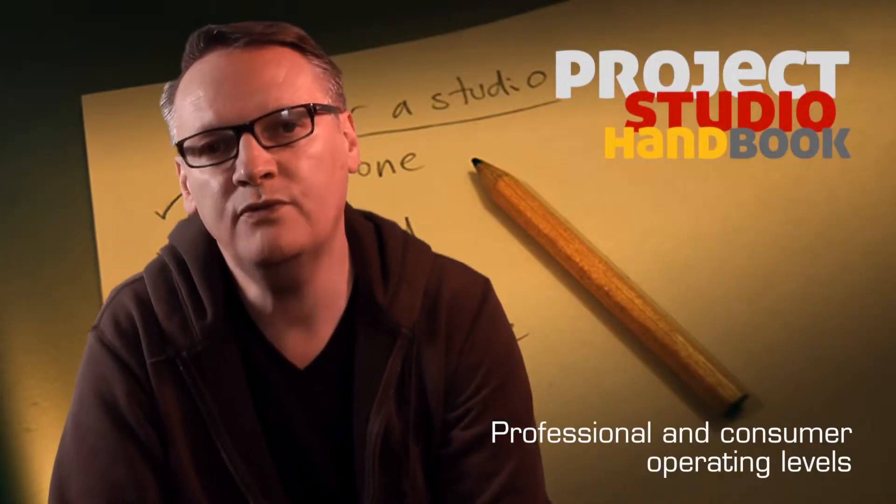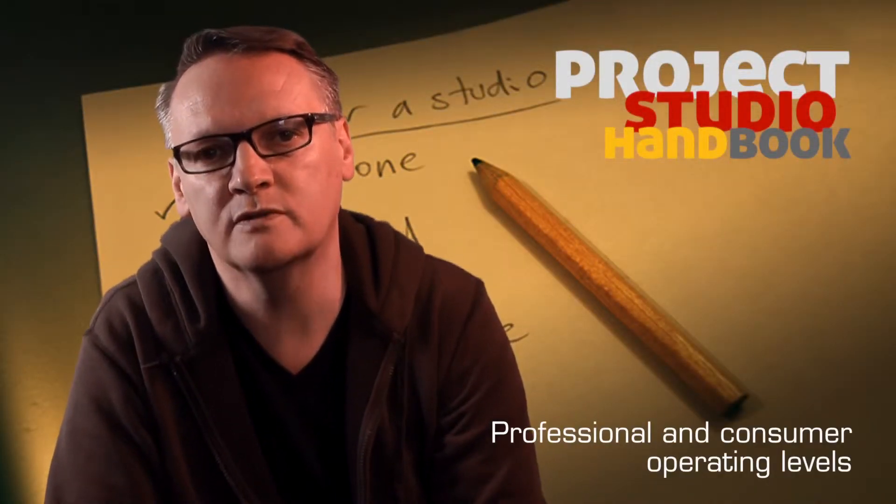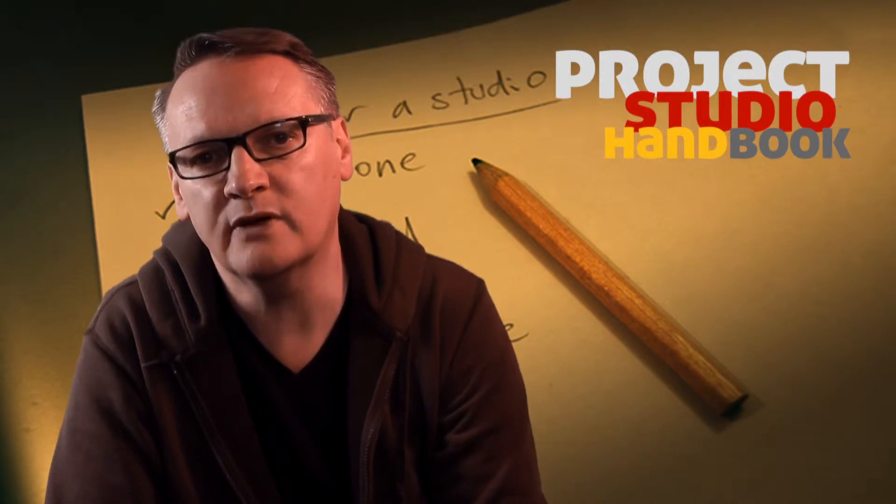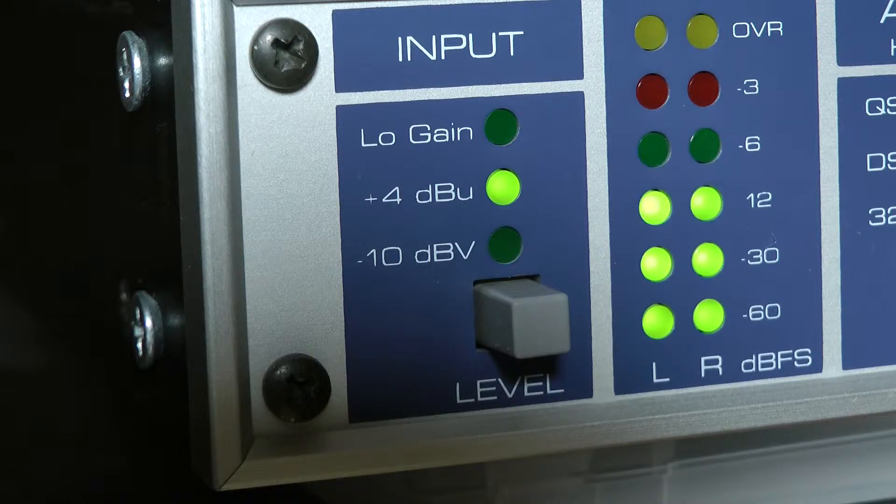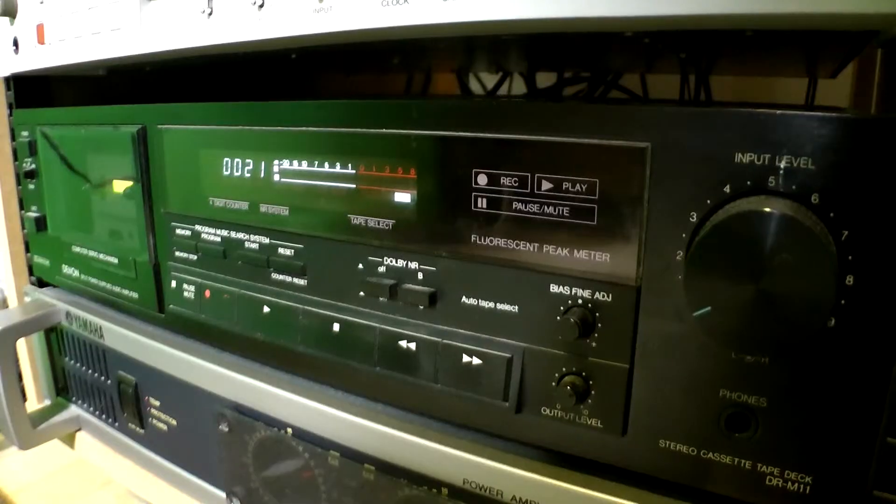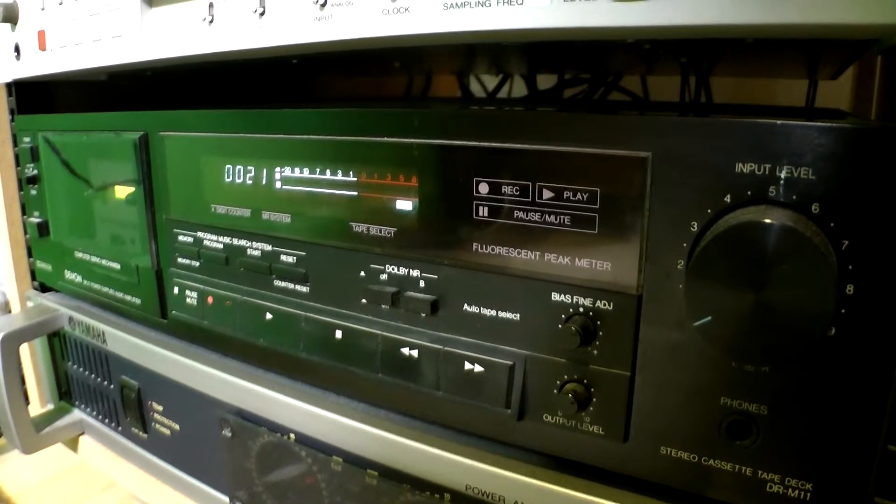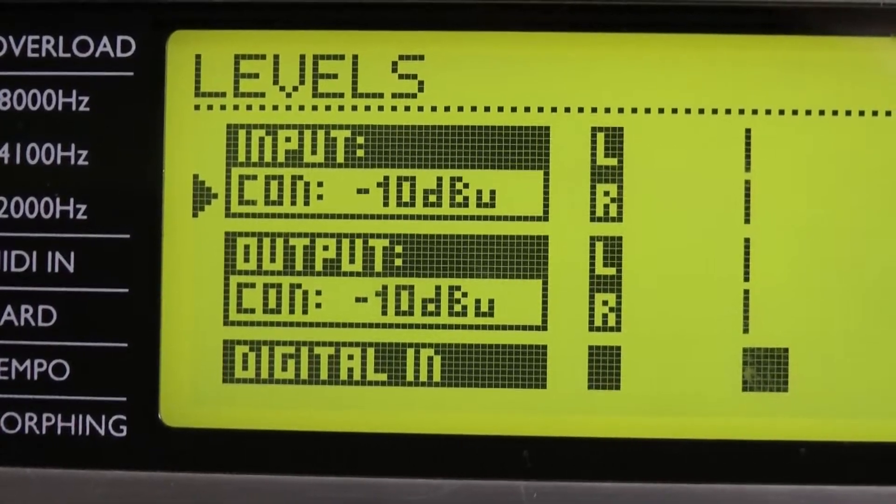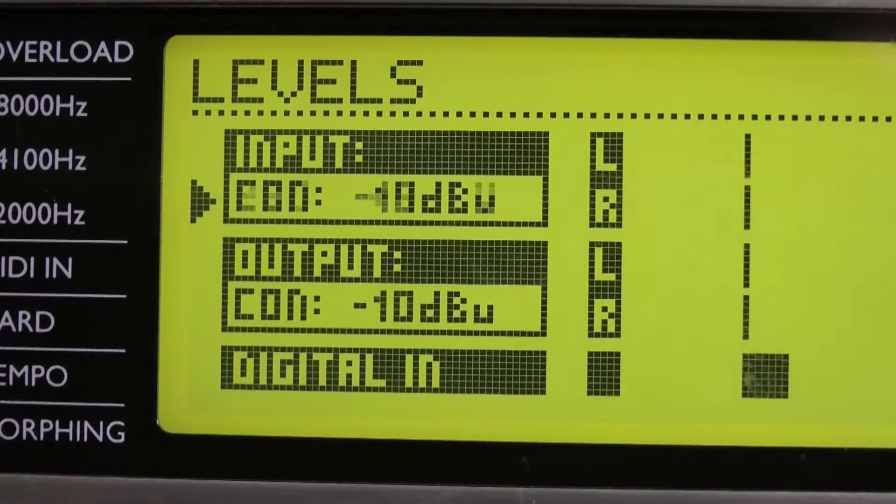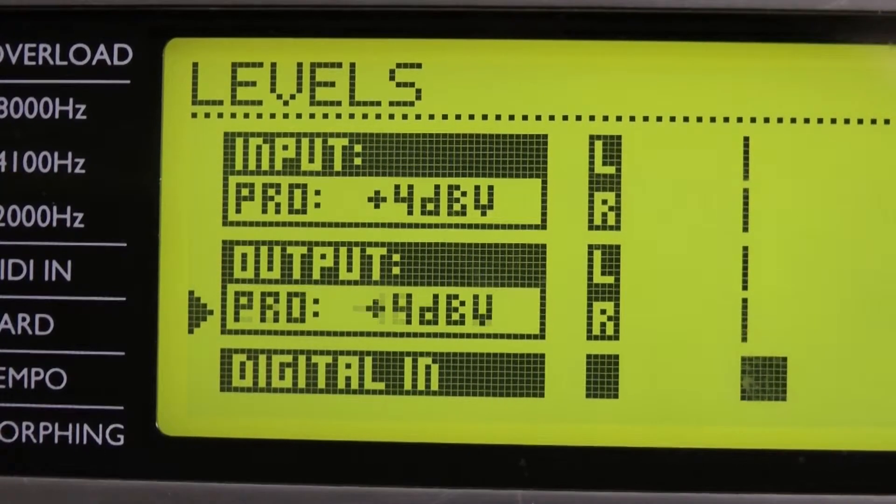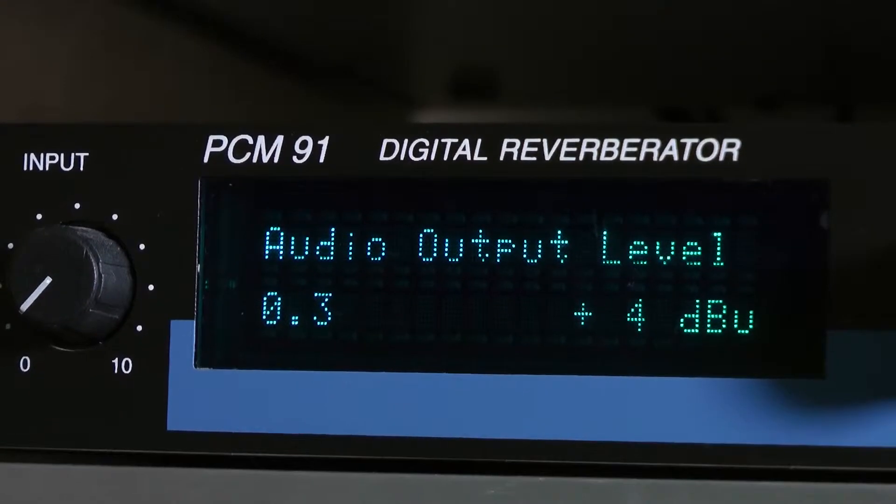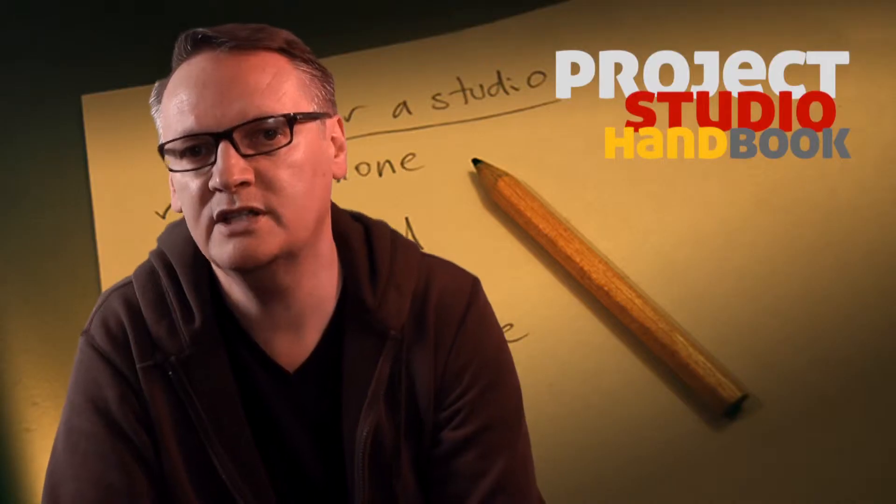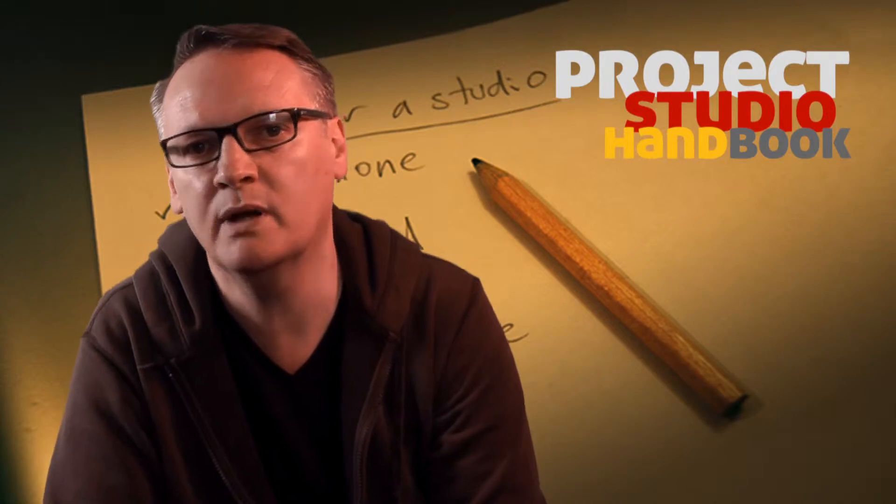There are two flavors of line level signals. These flavors differ in their strength or amplitude and are measured in decibels. Consumer and cost-effective equipment operates at minus 10 dBV, and professional equipment operates at plus 4 dBU. In practice, these flavors can easily be combined.